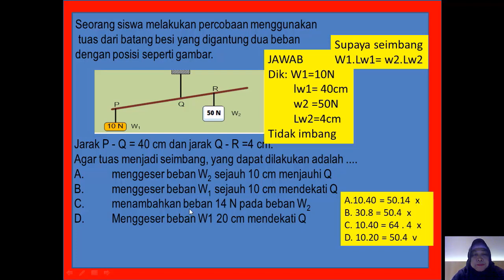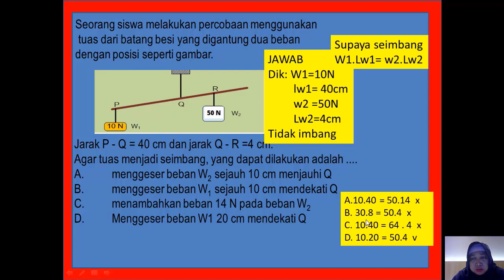Yang B: menggeser beban W1 sejauh 10 cm mendekati titik tumpuh, suruh maju. Awalnya 40 disuruh maju 10, jadi tinggal 30. Apakah 30 kali 10 sama dengan 50 kali 4? Tidak sama. Berarti salah.